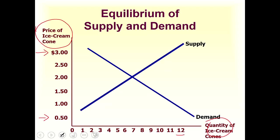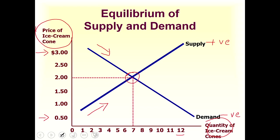This is the demand curve and this is the supply curve. The supply curve goes in the positive direction — there is a positive gradient or slope. The demand curve has a negative slope, it goes downward. So there is a negative relationship between price and quantity in the demand curve, and a positive relationship between price and quantity in the supply curve.